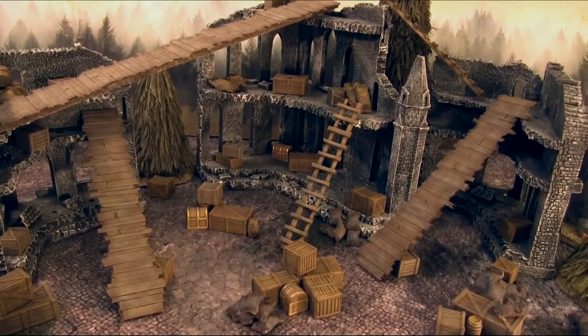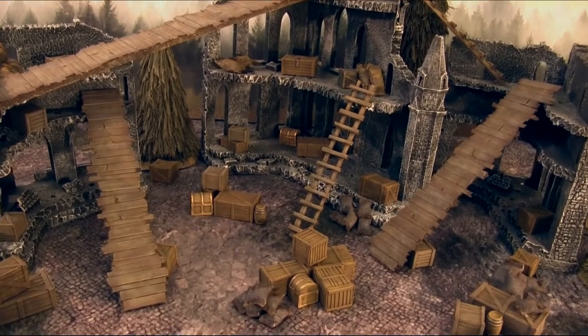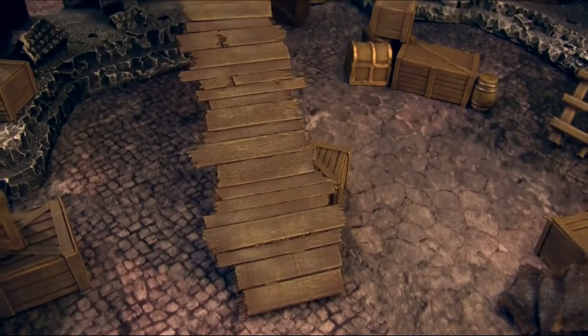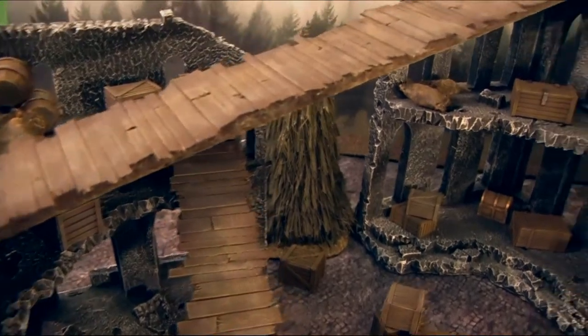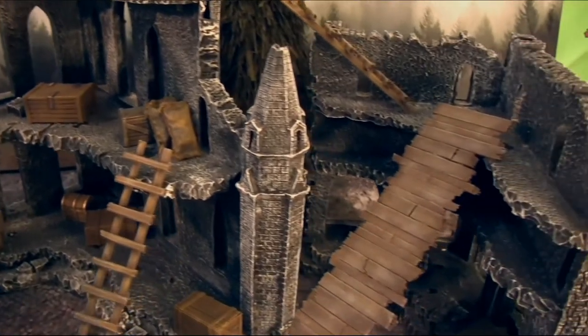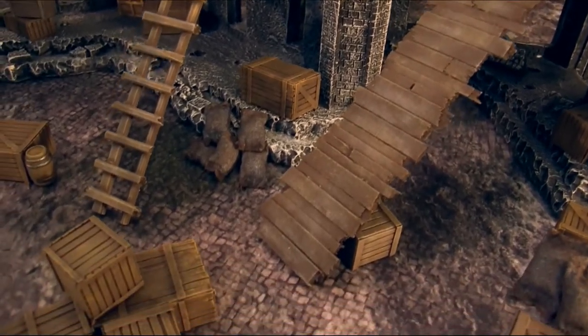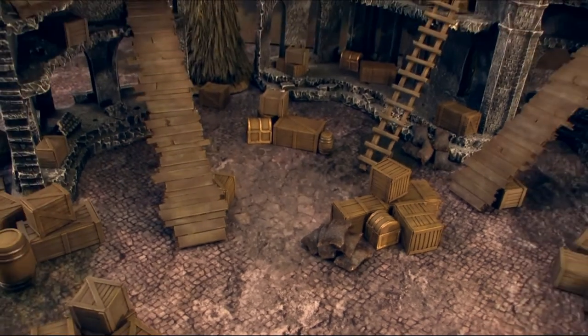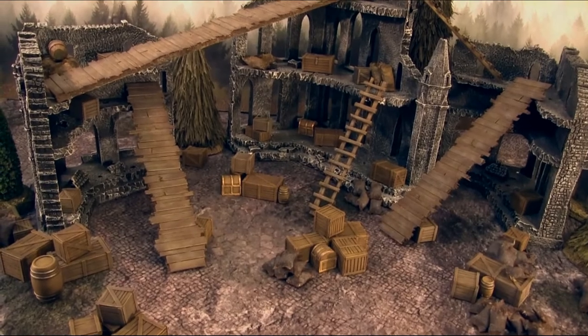Before we get started showing you how to make these planks and bridges and walkways, I wanted to show you how they look on the Mordheim table. Let's get a closer look here. They work well for ramps going up to buildings and also for walkways going from building to building. You can see how the texture and the various colors, grey, really help make them pop and look like weathered old plankways. Let's go ahead and show you how they're made.